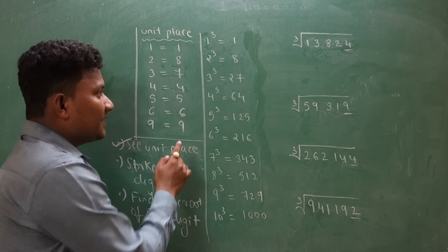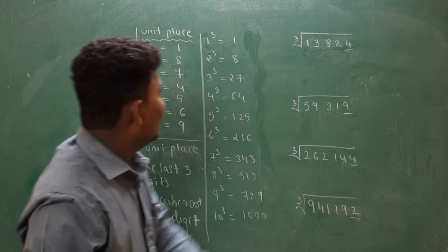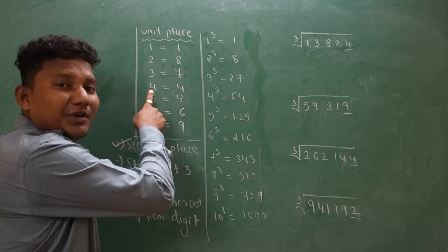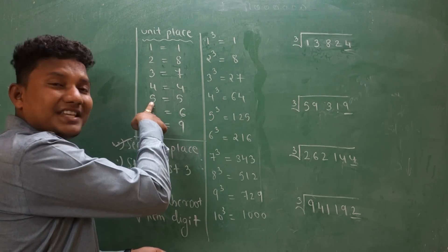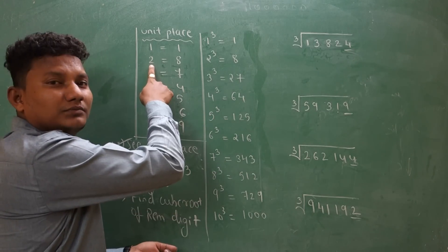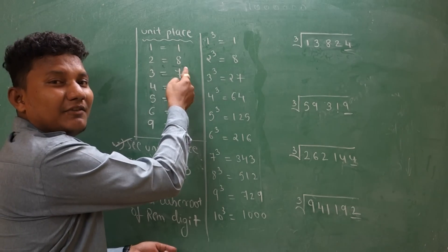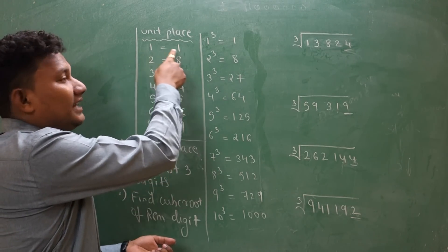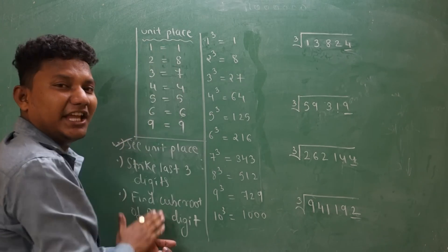See the unit place. Focus on this part: whenever you see 4 in the unit place, blindly write the answer 4. Whenever you see 5, blindly write the answer 5. In the same way, for 2 write 8, for 8 write 2, for 3 write 7, for 7 write 3, for 9 write 9, and for 1 write 1. Keep this unit place trick in your mind.